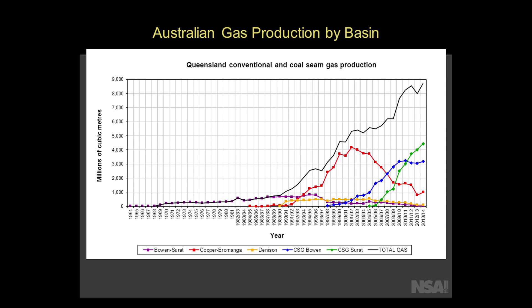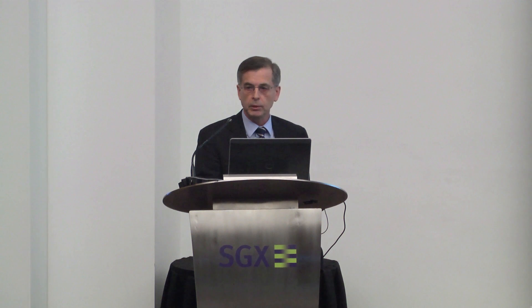Turning to this graph showing Australia's production: the black line is Australia's total natural gas production, including both conventional and unconventional gas. The red line was conventional gas from the Cooper Basin in the middle of Australia. When it started declining, you can see that in the same time frame the blue line and the green line — the two key basins producing coal gas in Queensland — increased at a dramatic rate, so much so that they not only replaced the conventional gas decline but caused the overall black line to continue to increase. That's projected to continue into the future, so coal bed gas has become a very big thing in Australia.